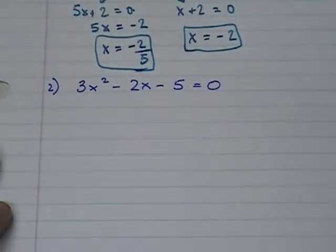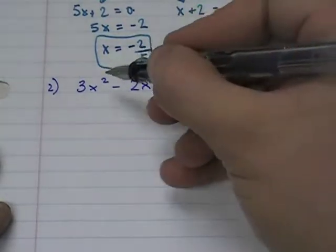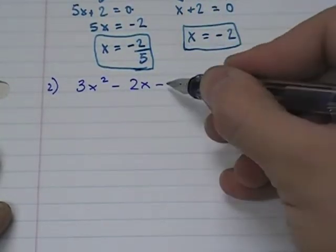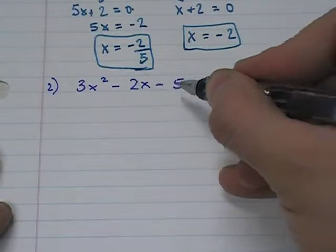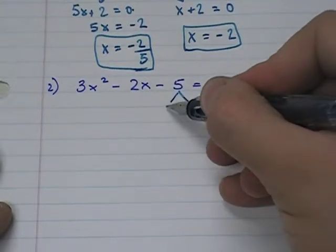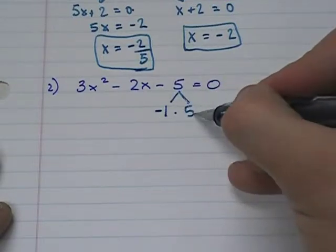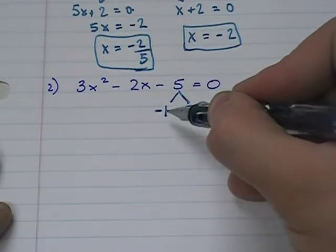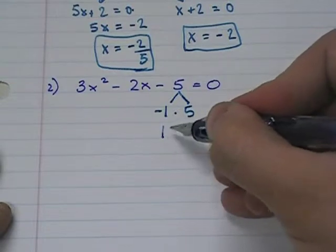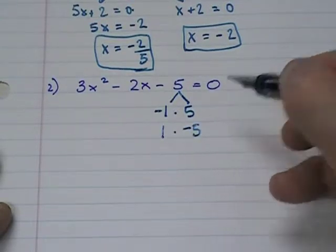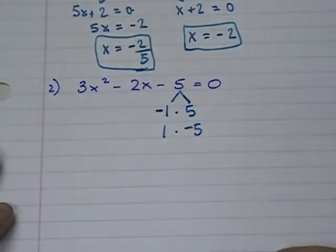Here we have 3x squared minus 2x minus 5. Now, because this is negative, the factors of 5 normally are 1 and 5. However, one of them, negative 1 times 5, makes negative 5. One of them has to be negative. So I could also have this factor.